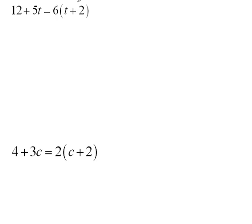Here again, with this problem, you should be recognizing that we have a distribution right here from the get-go. So we have to do that distribution to get 12 + 5t is equal to 6 times t is 6t, and 6 times a positive 2 is a positive 12.